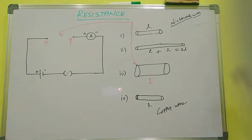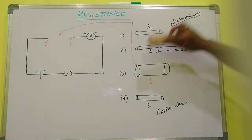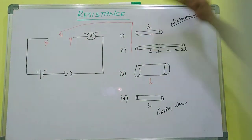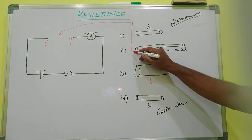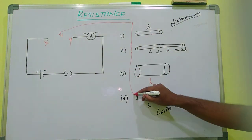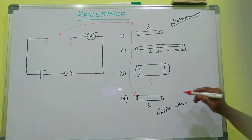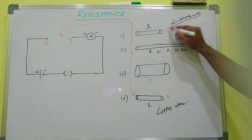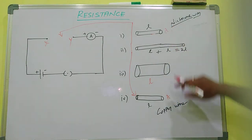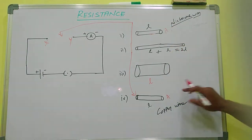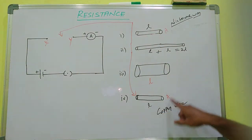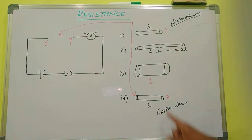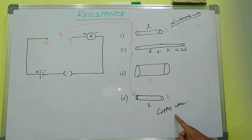In the last case, we use the same length L and the same area of cross-section A, but we change the material — we use a copper wire instead of nichrome wire, keeping the length and area of cross-section the same.